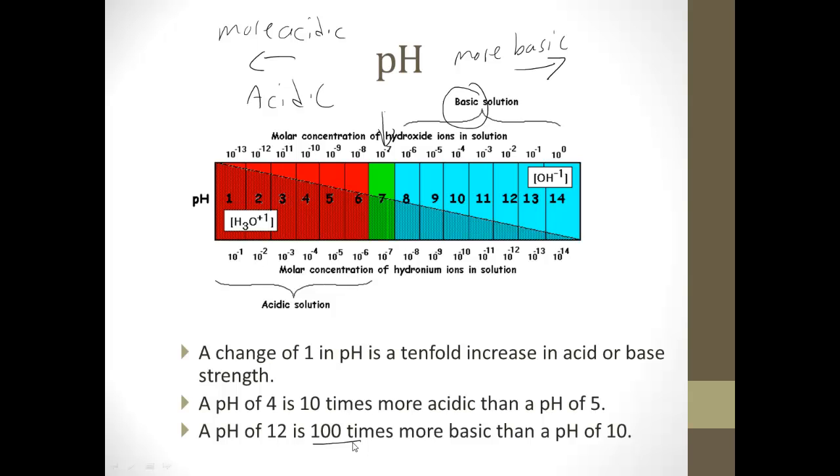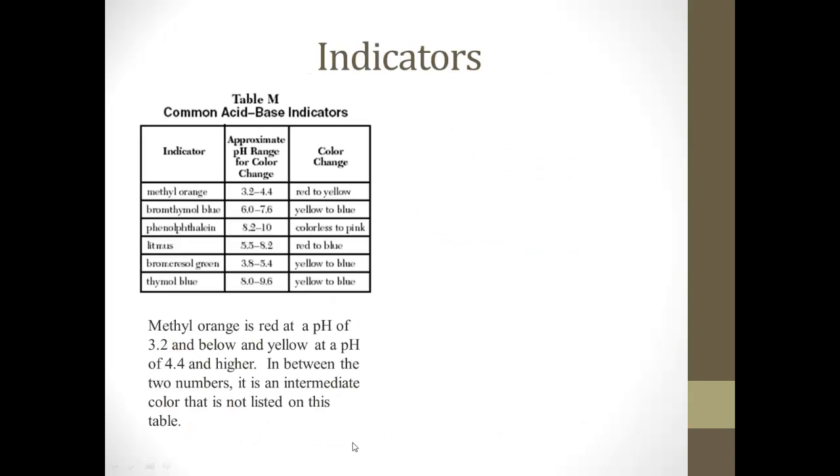A common question on the Regents deals with what's called indicators, and it's just based right on table M. Here's how these work. With methyl orange, if the pH is less than 3.2, it's going to be red. If pH is greater than 4.4, it's going to be yellow. In between, it's an indeterminate color, not listed on this table. But bromothymol blue, if pH is less than 6, it's going to be yellow. pH is greater than 7.6, it'll be blue.